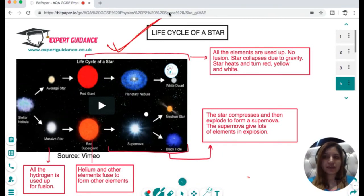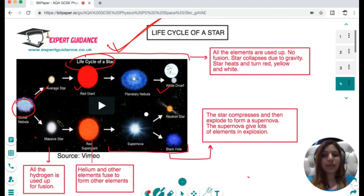It is very important to know the life cycle of the star. It starts with the stellar nebula. If there is a normal star, then it becomes a red giant and then a white dwarf. On the other hand, if there's a star bigger than the sun, then it goes into a red supergiant.